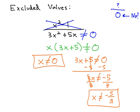These are our excluded values that would make the denominator equal to 0. We can't have 0 in the denominator, so we find those values by making the equation equal to 0, or making the denominator equal to 0, and solving the resulting equation.